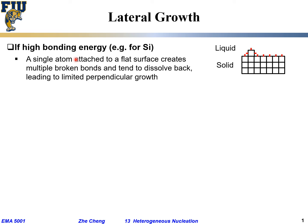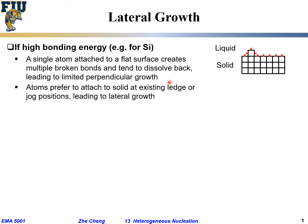The bonding energy is high for this material. So this extra dangling bond makes this atom highly unstable. That atom, even if it got attached, has a tendency to go back into the liquid. On the other hand, atoms in reality tend to attach at a specific location — a so-called existing ledge or jog position — to avoid too many dangling bonds, leading to so-called lateral growth.